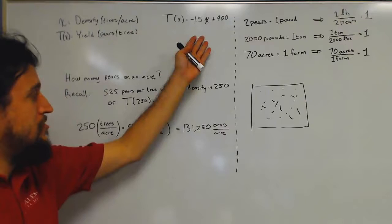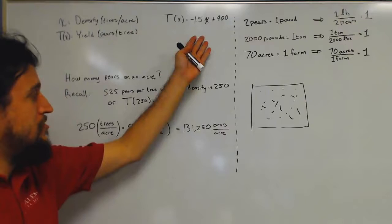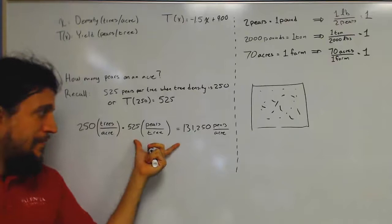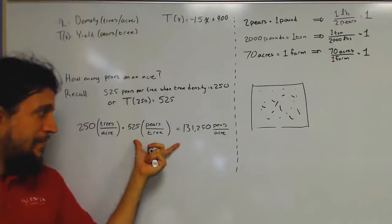So if each tree has a certain number of pairs, and we know how many trees are on that acre, all we have to do is just multiply those two figures by each other. So we have 250 trees per acre and 525 pairs per tree. We end up with this figure here, 131,250 pairs per acre.